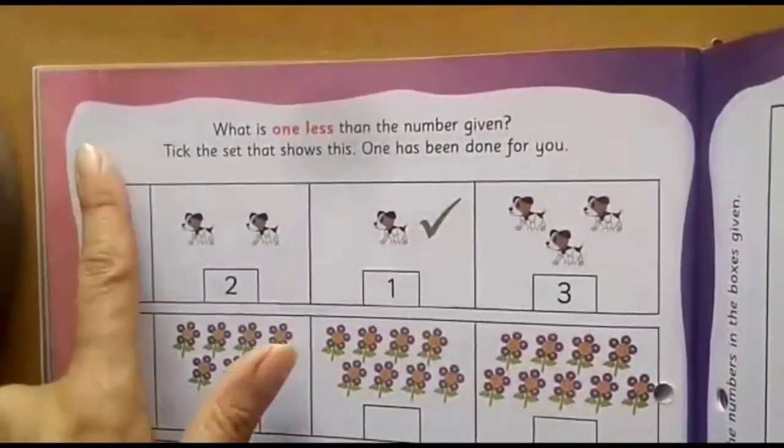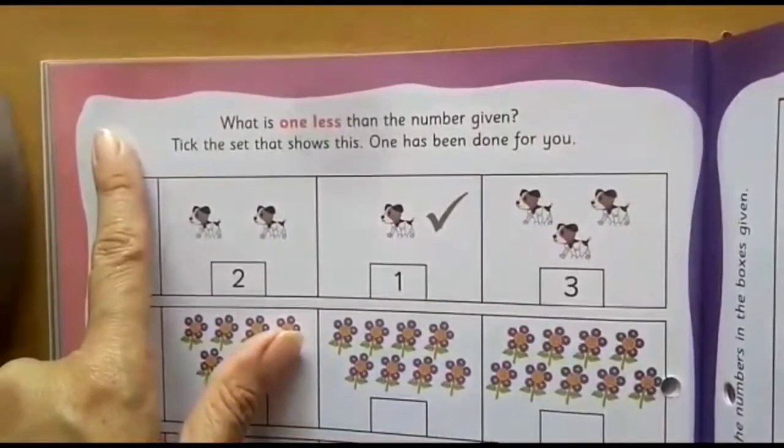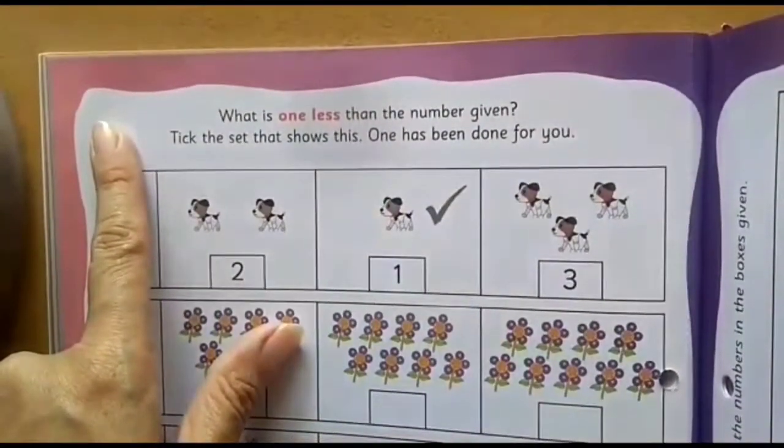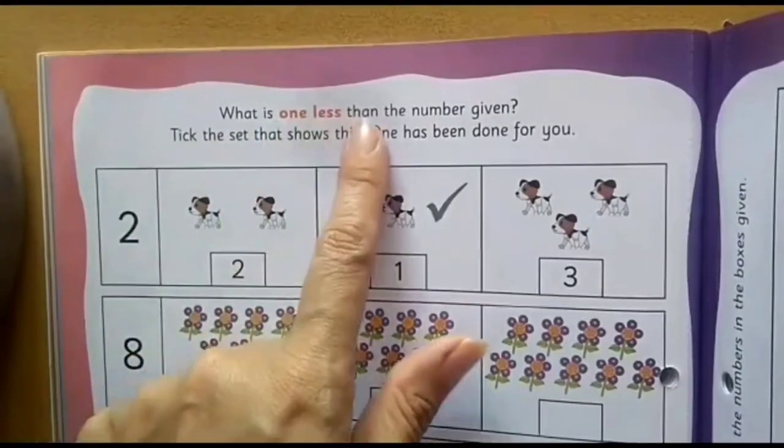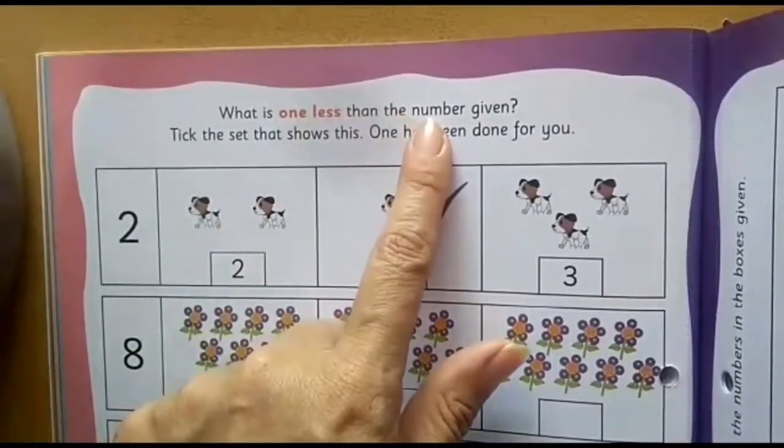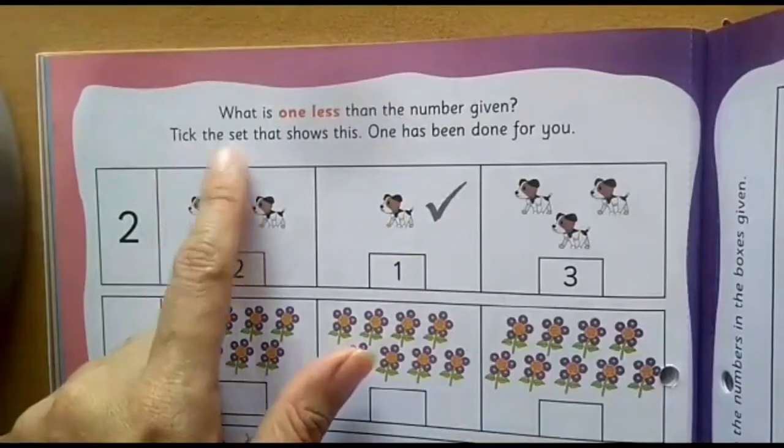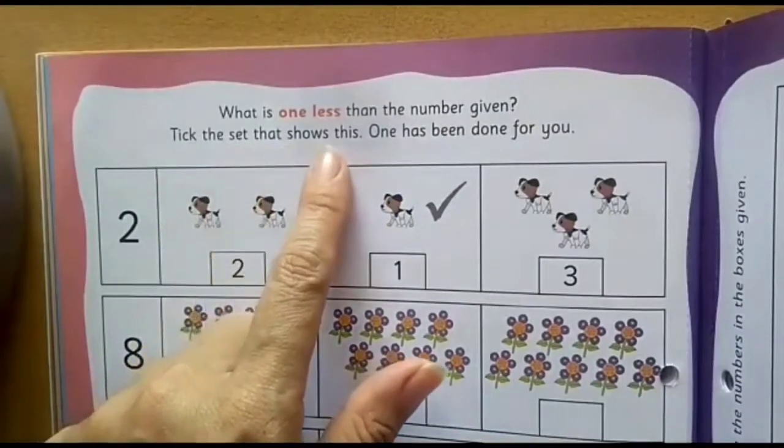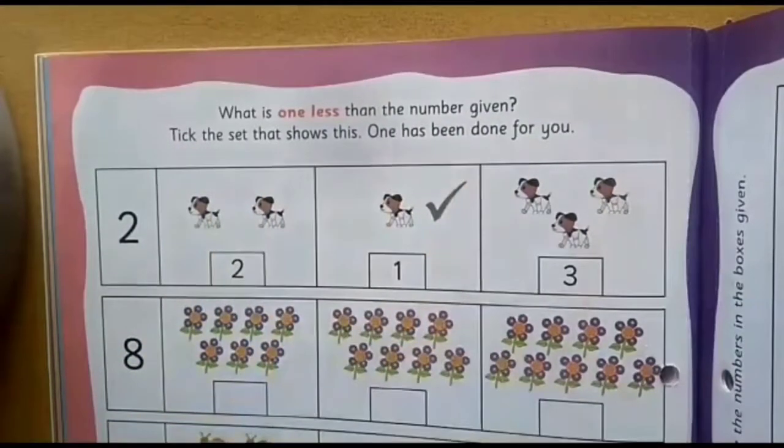As usual, after opening the page, you will write today's date and C.D.W. here. Now, I will read instructions for you. What is one less than the number given? Tick the set that shows this. One has been done for you.